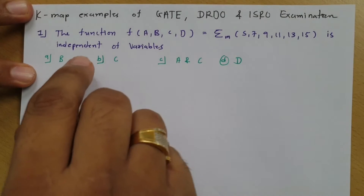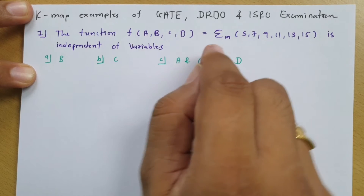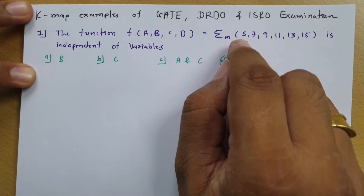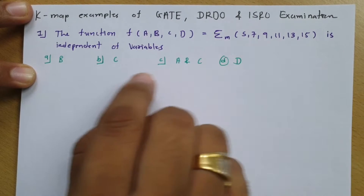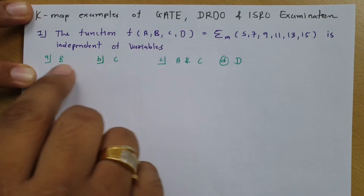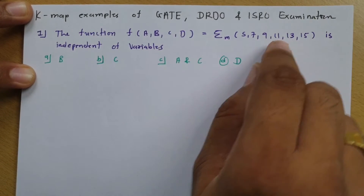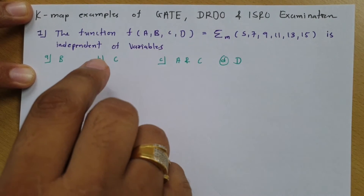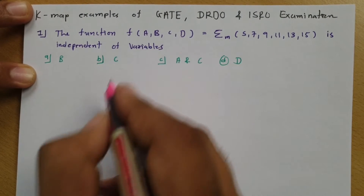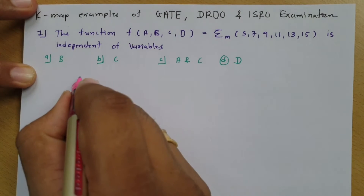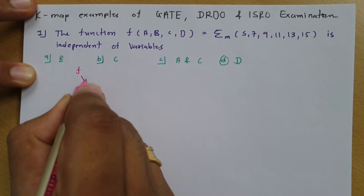In the first question, function f is given as a function of ABCD, expressed in terms of minterm summation. The question asks which variable the function is independent of. We will solve this using a KMAP first and then see which variable it is not depending on. This is a four-variable KMAP.